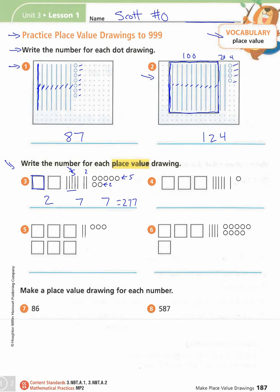Your job now is to figure out the numbers for place value drawings four, five, and six. Pause the video, fill those out, then start it back up. Next, we're making place value drawings for the numbers 87 and 587. Go ahead and do that, pause the video, and when you're done, start it back up.